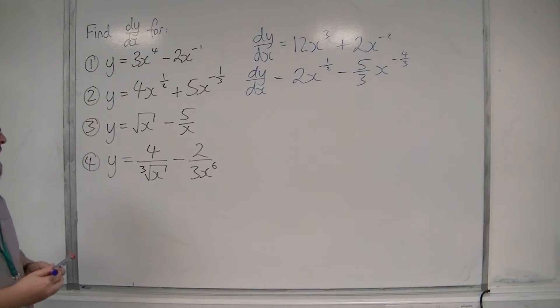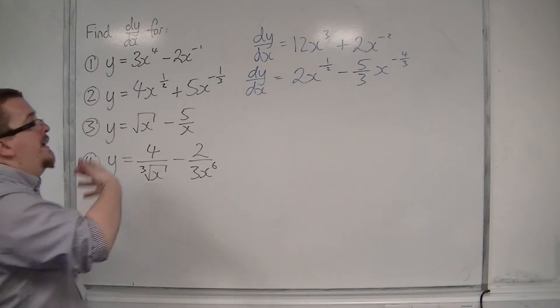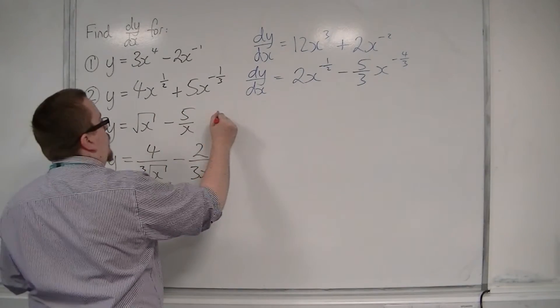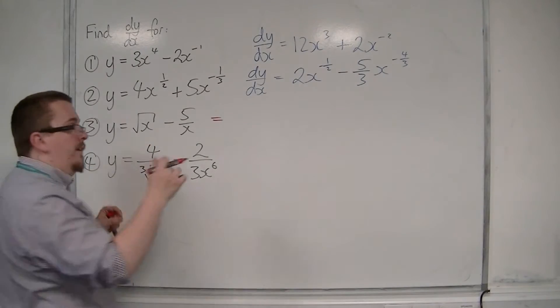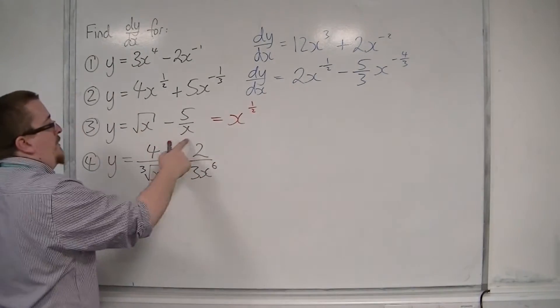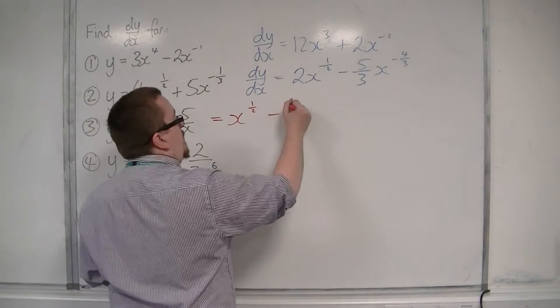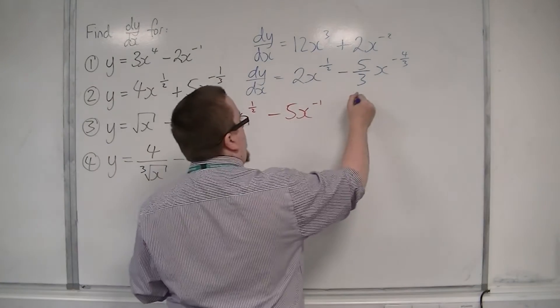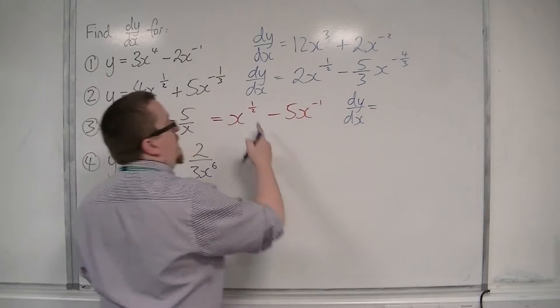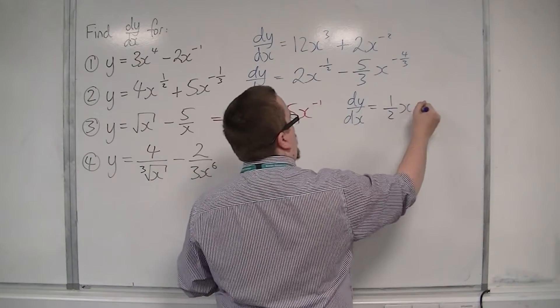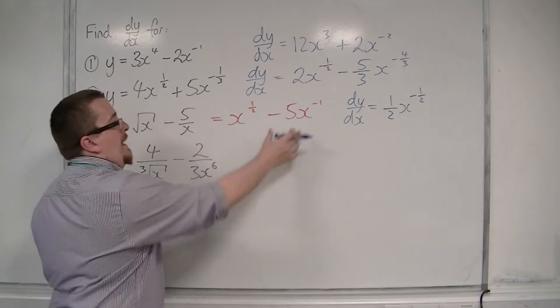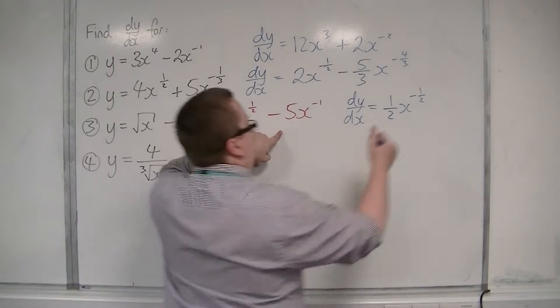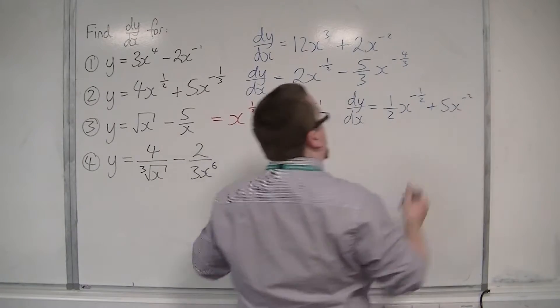Then we get on to number 3 and number 4 for that matter, where really we want to rewrite these equations first so that we have it as x to the power in this index form. So we know that the square root of x is x to the half, and minus 5 over x is the same as minus 5x to the minus 1. So then I'm able to differentiate it much more easily. The half can come down to the front, take 1 off the power. And then the minus 1 can come down to the front, so now plus 5x to the minus 2, because I've taken 1 off the power.